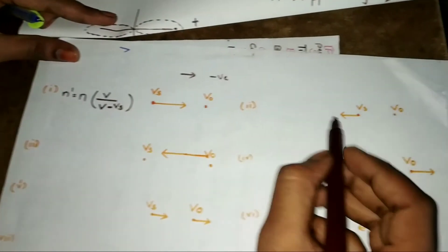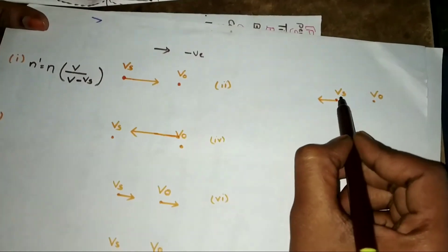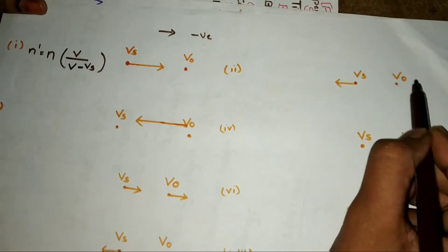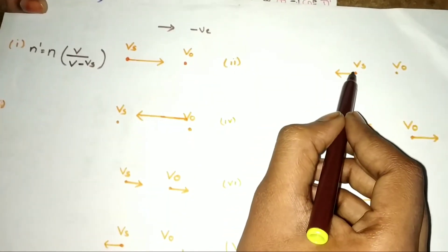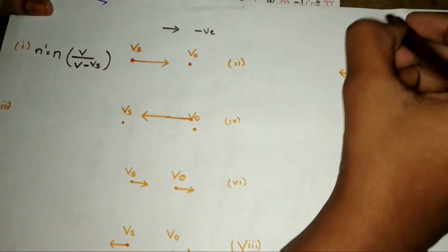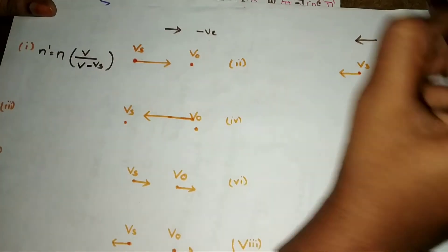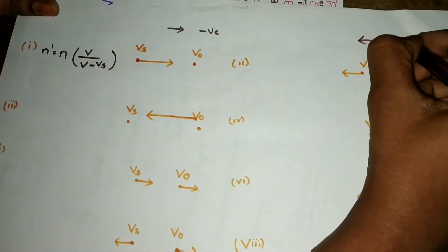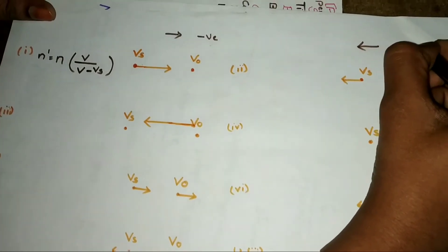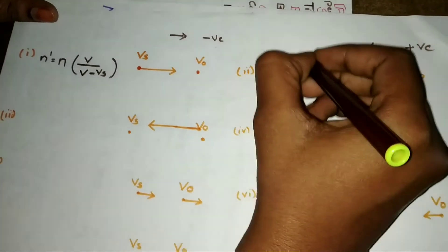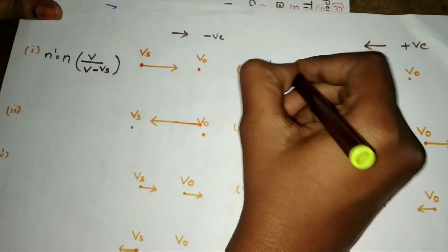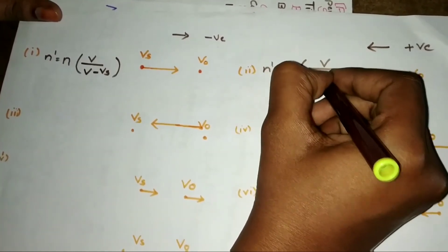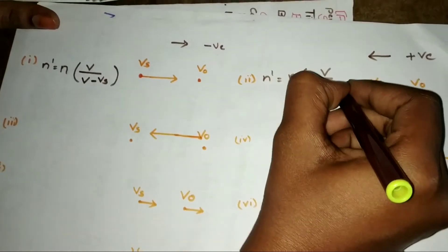Case 2: Source is moving away from the observer. Observer is at rest as usual. The source is moving in the negative direction on the number line, but for this trick you take it as positive. So N-dash equals N of V by (V + Vs).